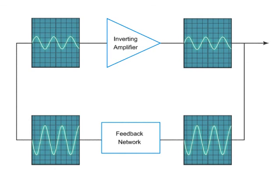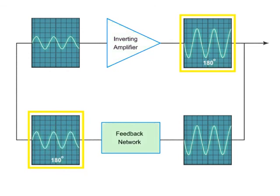The phase state is sustained when the inverting amplifier's 180 degree phase shift is reversed by the 180 degree phase shift of the feedback network.